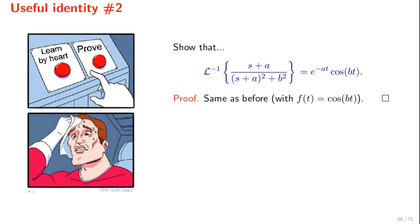We can prove the second identity following exactly the same procedure. You can write down these two identities because they are very useful, and we will use them in what follows.